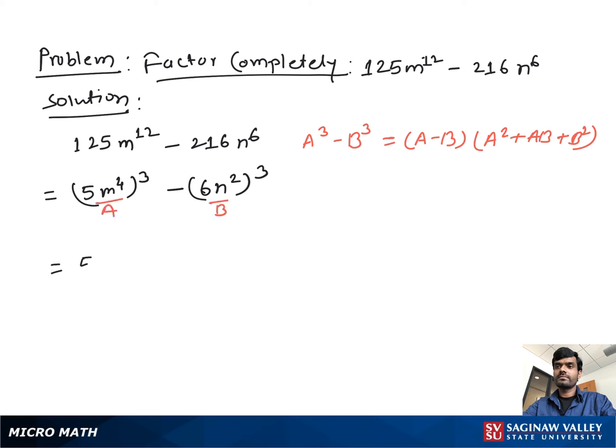If we suppose 5m⁴ as A and 6n² as B, then you can write: